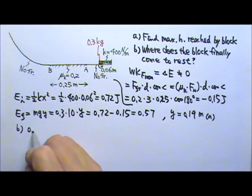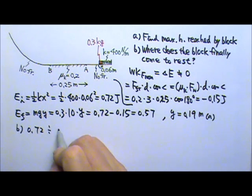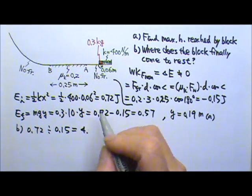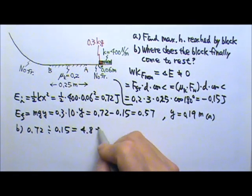So it's like you have 0.72 joules, and then every time you go through this, you have to pay this much to friction. So how many times can you go through this region? So for part B, we can do 0.72 divided by 0.15.